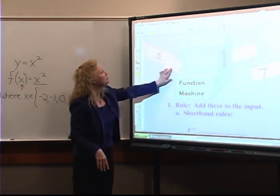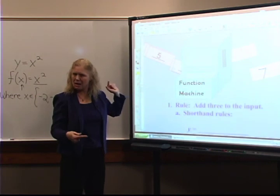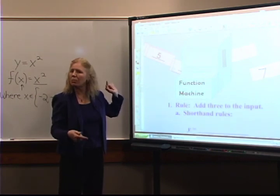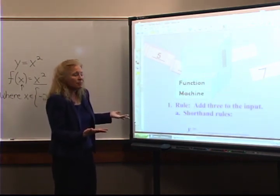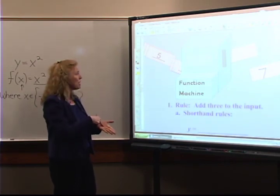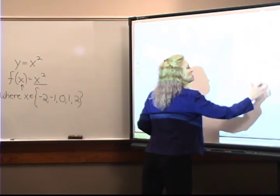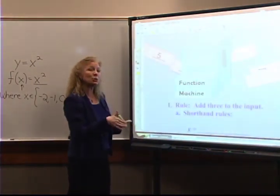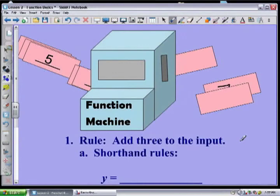Four was the domain element — the input — and seven was part of the range — the output. Now I decide I want to run negative two in. Is there a problem with adding three to negative two? No, so negative two is in the domain. As I run that negative two in, what comes out? Negative two plus three is one.